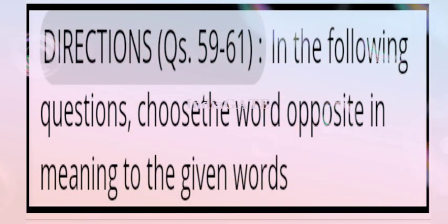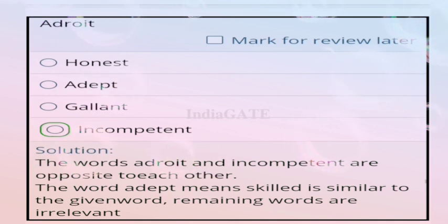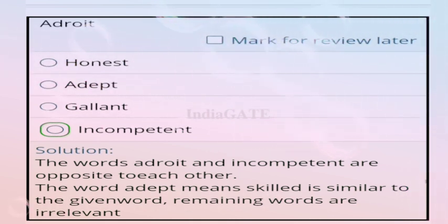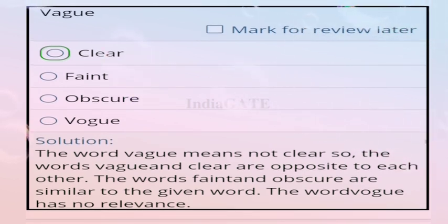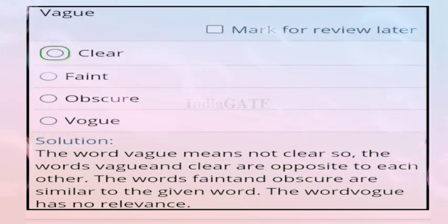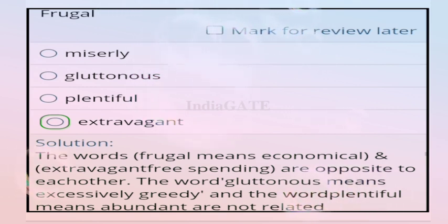Direction for questions 59 to 61: choose the word opposite in meaning to the given word. Question 59: adroit — correct answer is incompetent, as adroit means skillful and incompetent is its opposite. Question 60: vagueness — correct answer is option A, clear, as vagueness and clear are opposites. Question 61: frugal — correct answer is option D, extravagant, as frugal means economical and extravagant means free spending.